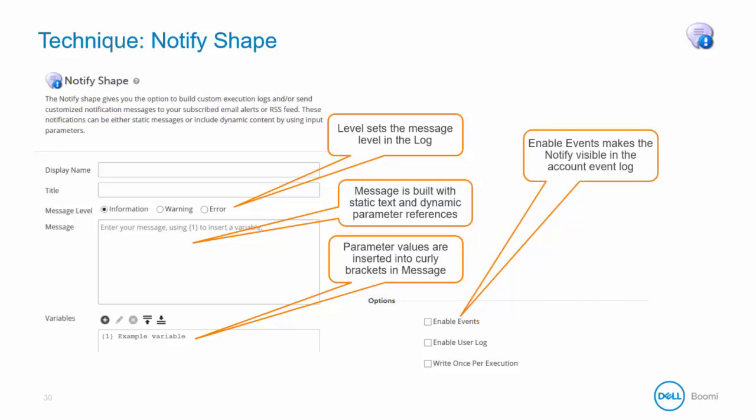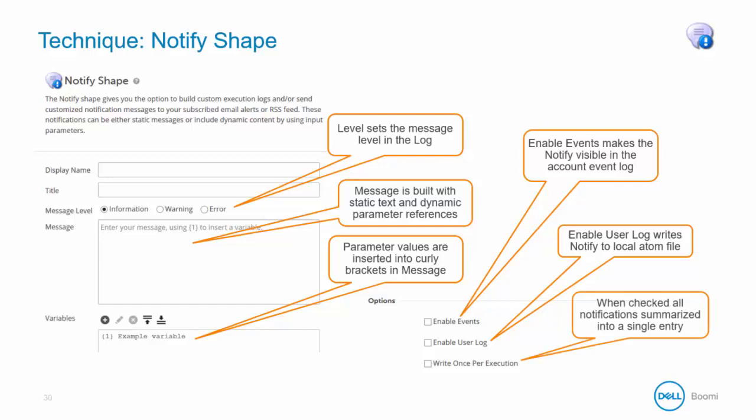Enable events makes the notify visible in the account event log. Recall that the event log is the system generated log and you are adding to it. Enable user log writes the notify message to the local atom file. Recall the user log is the real-time accessible log written to the local atom. Finally, we have the write once per execution option. When checked, individual log entries or event messages that are generated per document that reaches the notify shape are aggregated and written only once. This checkbox is off by default.